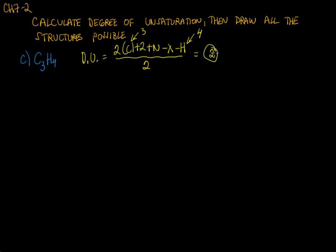What this value means is that we could have two rings, we could have two pi bonds, or we could have one ring and one pi bond. The sum of the pi bonds plus the rings must equal 2.